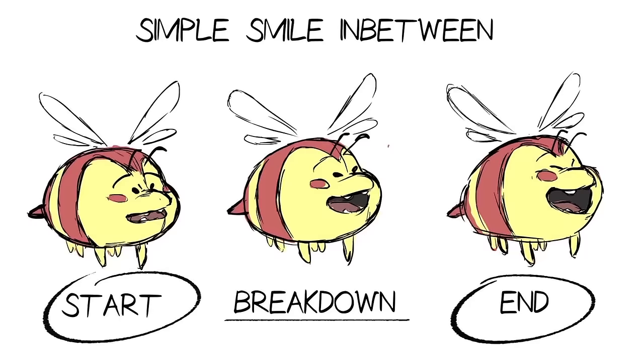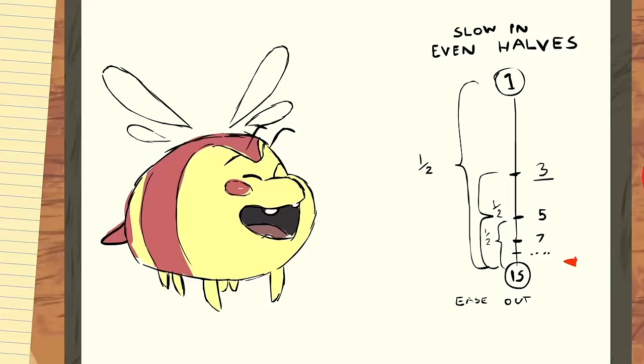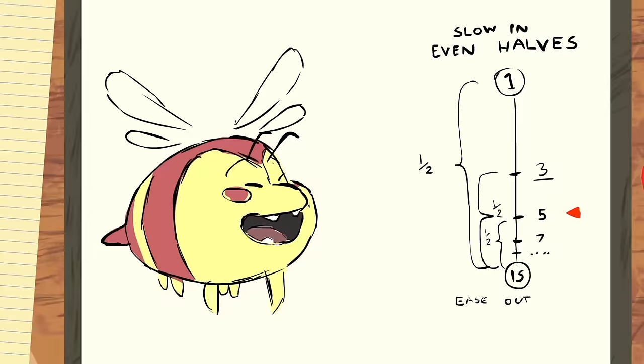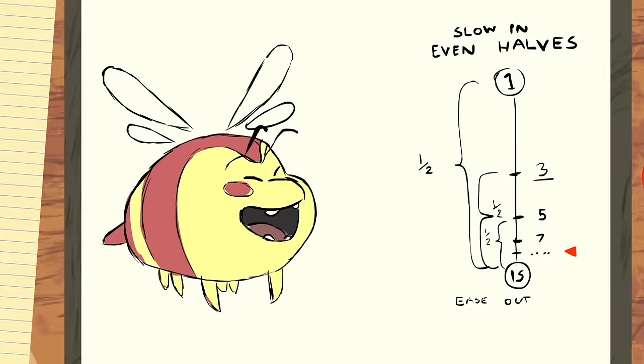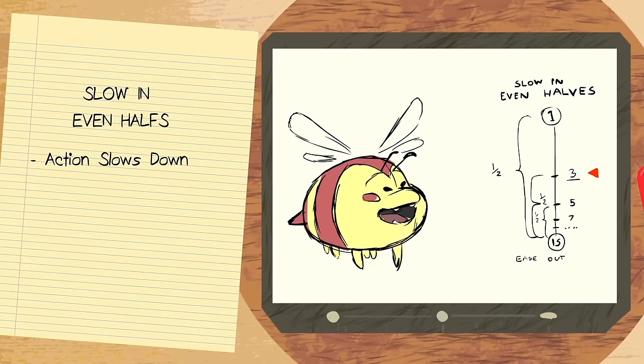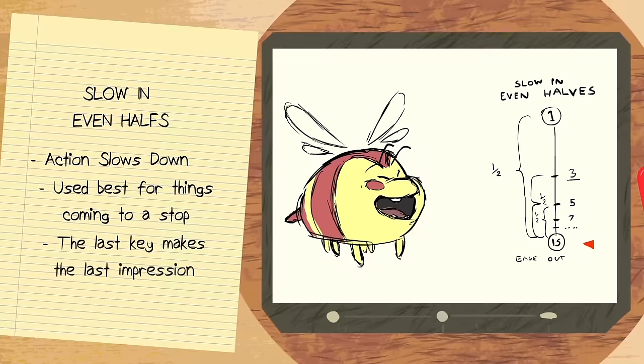The start, its breakdown, and its end. I'm going to use these same drawings for these following examples. I animated an in-between the bee demonstrating the first type of chart on the list, a slow in and even halves. Notice how it starts off as very fast and ends at the last key with a decreasing speed. I achieved this effect by having a lot of drawings in between our breakdown and our last key, with no in-between between our first and last. This chart is used best for things slowing down after an abrupt movement. It's great for actions slowing down to a full stop, and great for having a final impact on the take, where the last key makes the most impression.